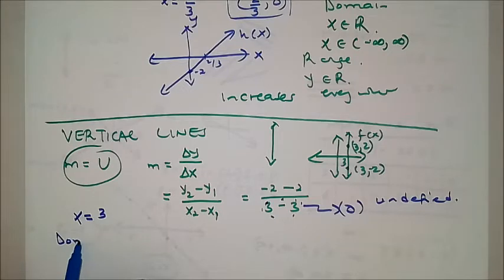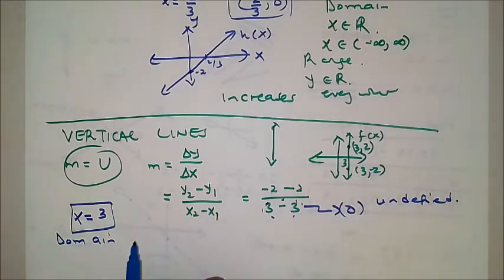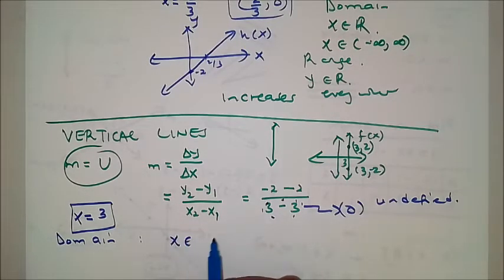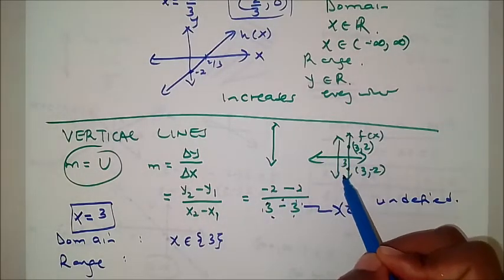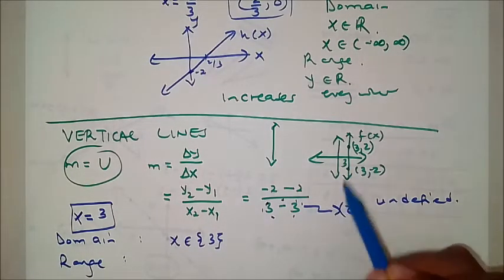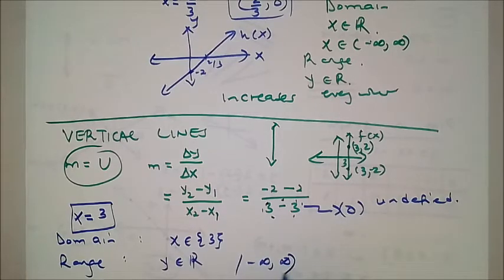The domain of a vertical line — using x = 3 as our example — is x is an element of {3}. That's it; it can't get any better than that. For the range, since the function goes up and down without limit, y is an element of real numbers, from negative infinity to infinity.